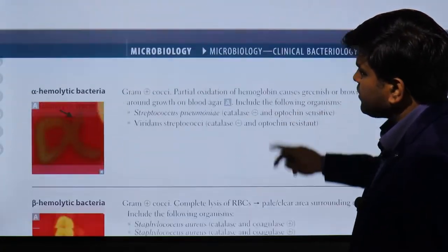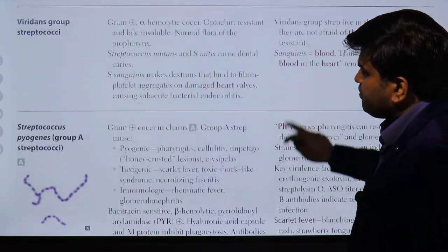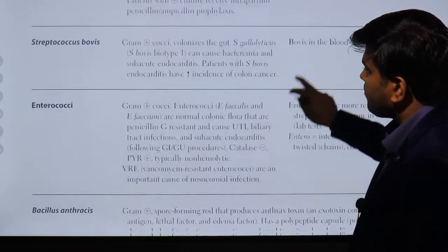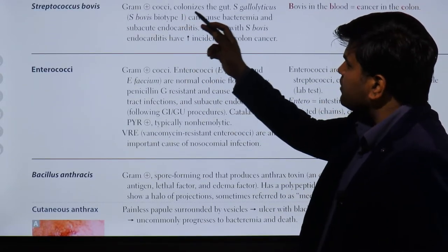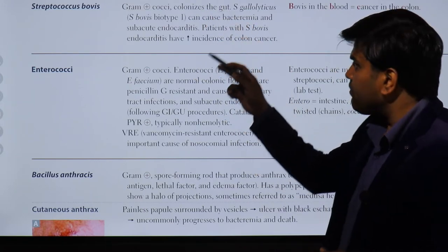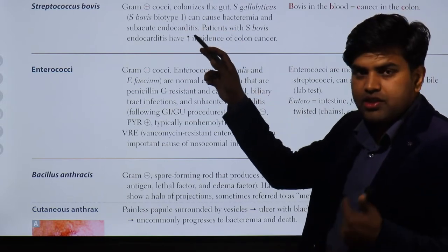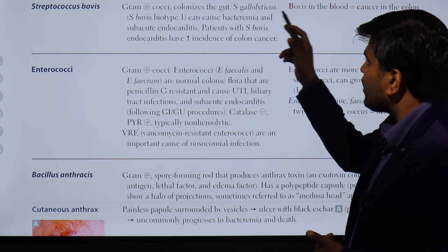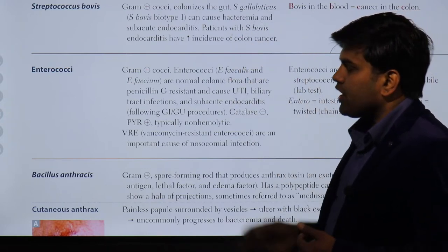Let's go to Streptococcus bovis, on page 137 of First Aid USMLE. Streptococcus bovis is gram positive and colonizes the gut — it is normally present in our gut. Streptococcus gallolyticus, which is Streptococcus bovis type 1, can cause bacteremia and subacute endocarditis.